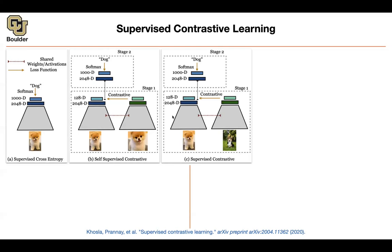What if you have labeled data? Then you don't need to compare an image only to an augmented version of itself — you can compare a dog to a totally different dog, because in the end of the day they are both dogs. You can write down your contrastive loss, learn your features, transfer them to stage two, and do classification. Mathematically speaking, you are writing a supervised contrastive loss — if you hear the word 'SupCon,' that corresponds to supervised contrastive.